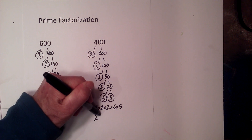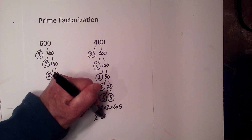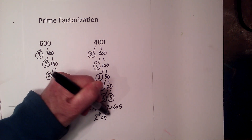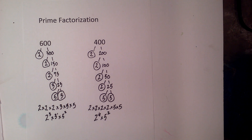You can shorten that to 2 to the 4th times 5 squared. I hope that helps in finding the prime factorization of 600 and 400. Thanks for watching — Moomoo Math uploads a new math and science video every day, please subscribe and share.